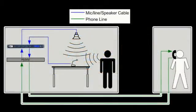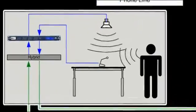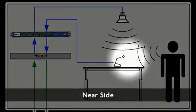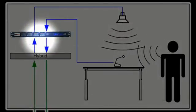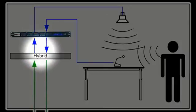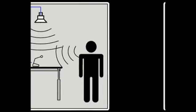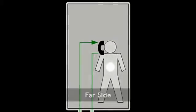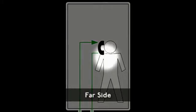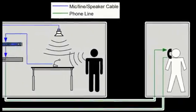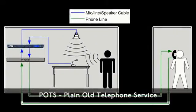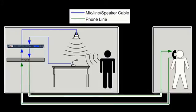A basic conference call consists of the near-side and the far-side. In its simplest form, the near-side consists of a near-side talker, a microphone, a loudspeaker, a SoundWeb London device with an AEC card installed, and a telephone hybrid. The far-side consists of just the far-side talker and a phone. The two sides will most commonly communicate over a standard POTS line, although the use of a full bandwidth T3 line is not unheard of for communication over short distances.